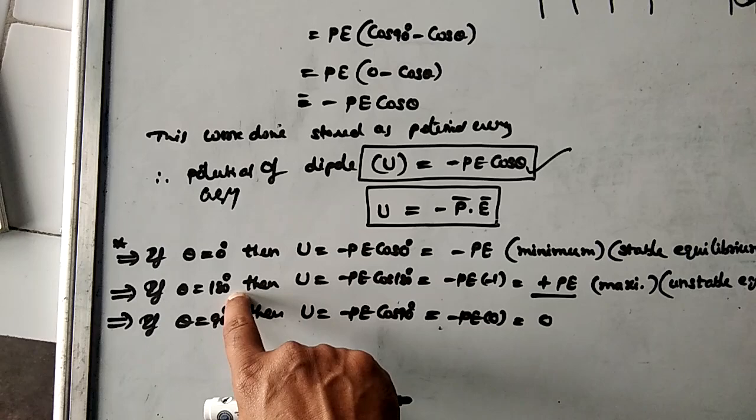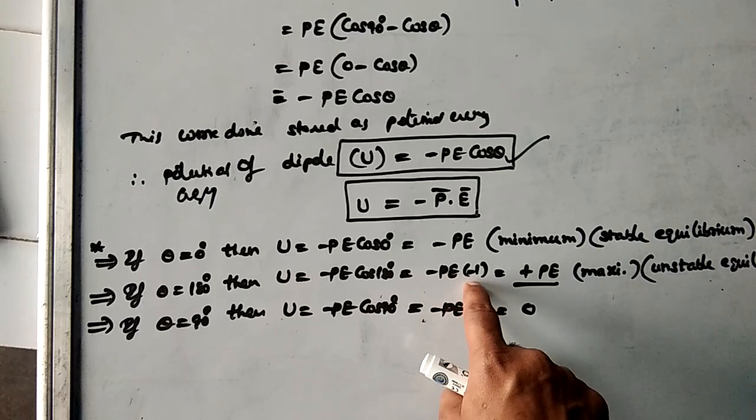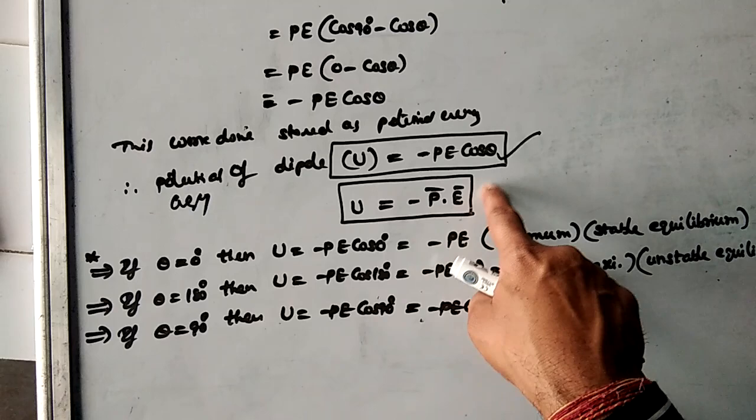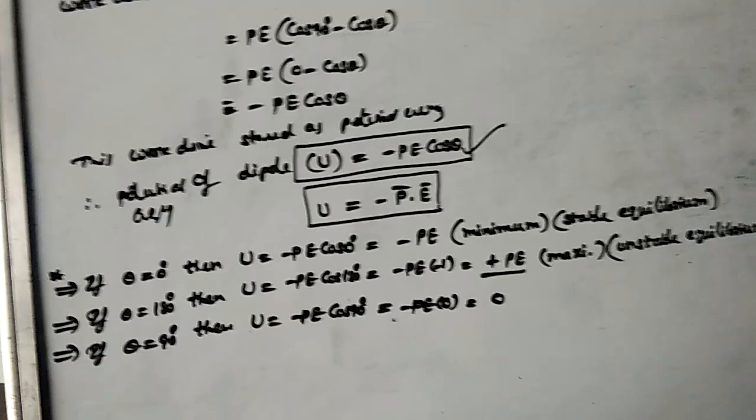For theta = 180°, cos 180° = −1, so U = −PE × (−1) = +PE. For theta = 90°, U = −PE cos 90° = −PE × 0 = 0.